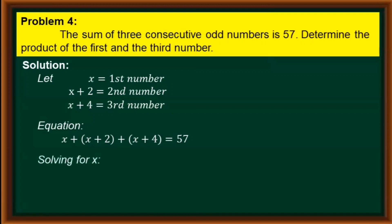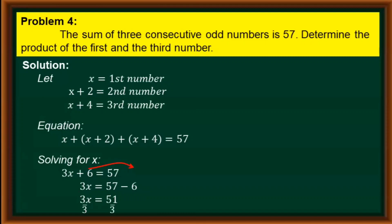We now solve for the value of x. Combining similar terms, x plus x plus x equals 3x, and 2 plus 4 equals 6. The resulting equation is 3x plus 6 equals 57. We transpose positive 6 to the right side, giving us 3x equals 57 minus 6, which equals 51. So our equation is 3x equals 51. Dividing both sides by 3, we cancel the 3s on the left side and 51 divided by 3 equals 17. So x is equal to 17.